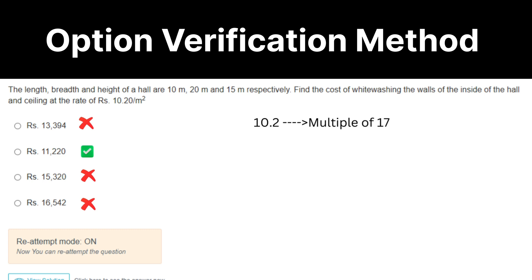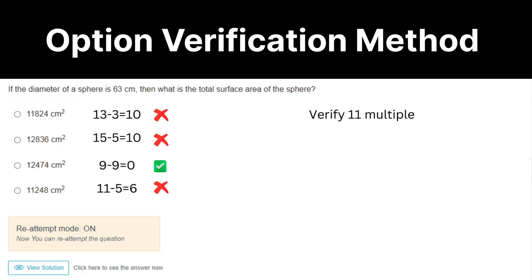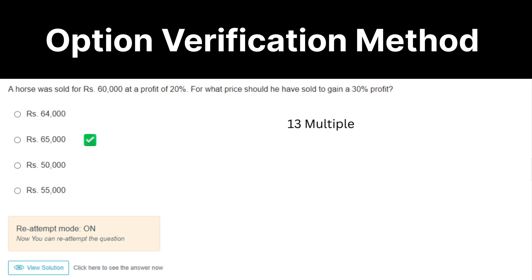Next one: ceiling at the rate of 10.2 per meter square, which means the answer should be a multiple of 17. Verify the same in the options. Diameter of sphere is 63. What is TSA of the sphere? You can verify the 11 multiple in the options. 30% profit, which means it should be a multiple of 13. That's it.